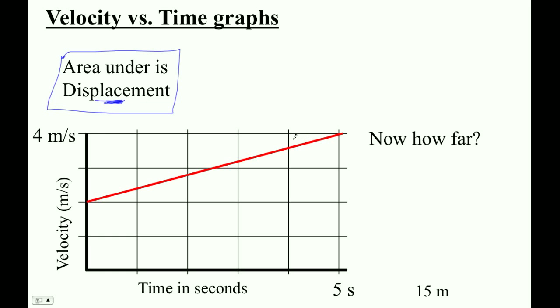Or the distance in this case. So if you look at this thing, what I'm seeing is that the area under this graph—here we've figured out all that area—that would give us how far the object went.